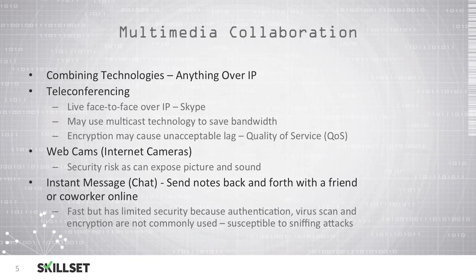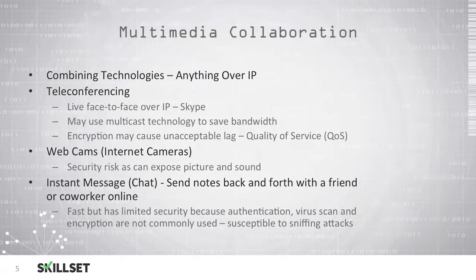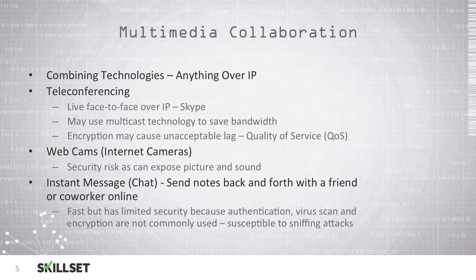If we have encryption technology in place we must be aware that this could cause unacceptable lag and delay when we're communicating. Typically, quality of service or QoS is used to prioritize voice over IP traffic and teleconferencing traffic to make sure that the user has an acceptable experience. We can also use webcams or internet cams, but we want to keep in mind that this is a security risk because it could expose your picture and sound without your consent if you have some type of malicious software on your computer.